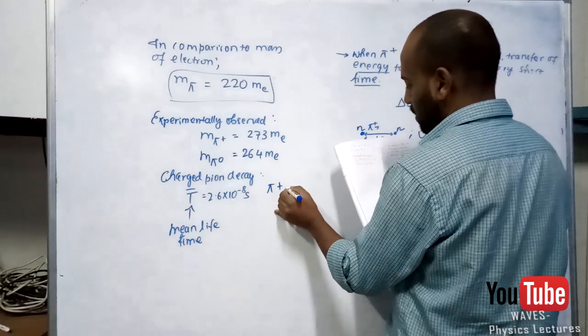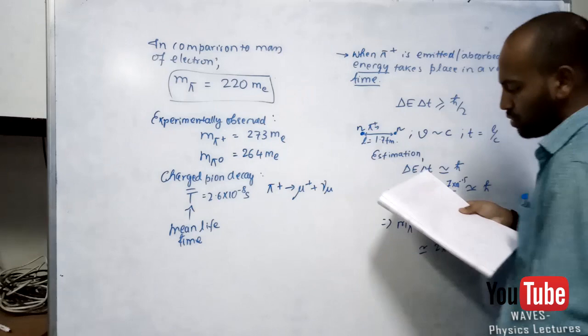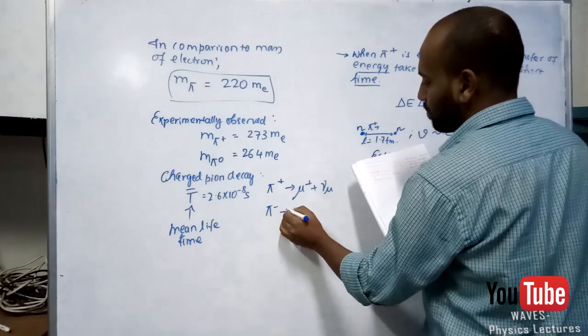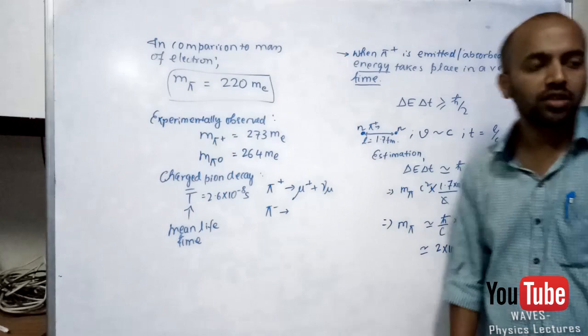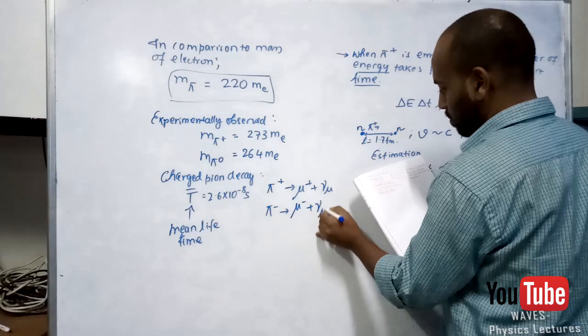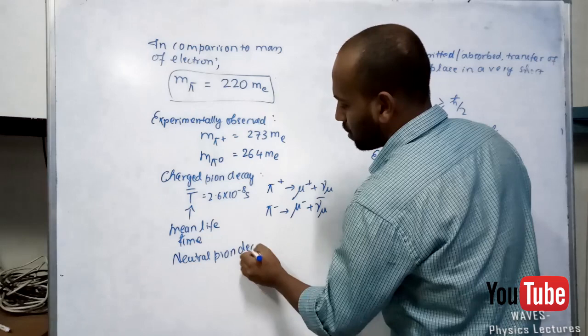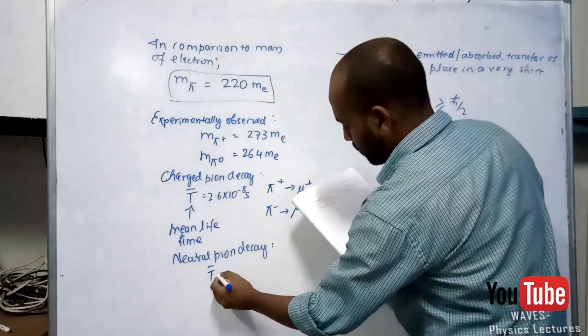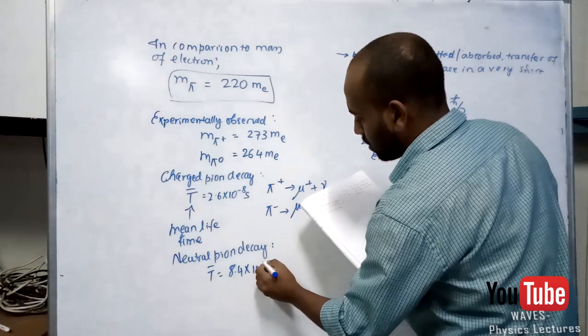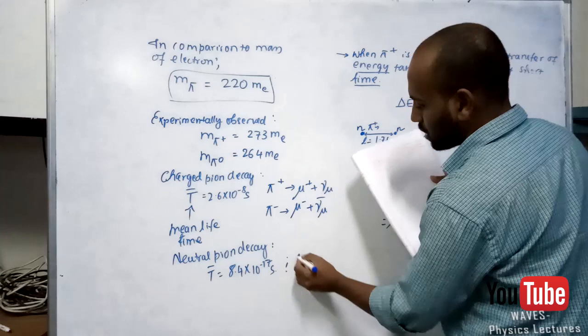Pi-plus decays into mu-plus plus a muon neutrino. And for neutral pion decay, the lifetime is much shorter — it decays even faster. The pi-zero decays through gamma radiations into two photons.